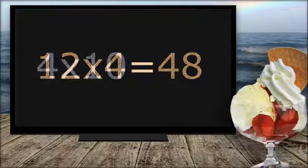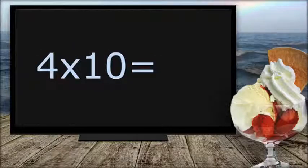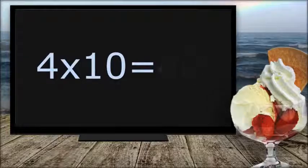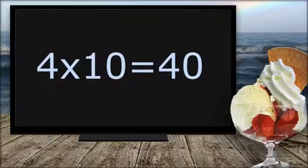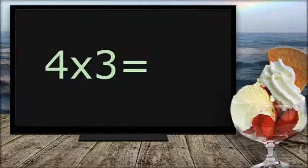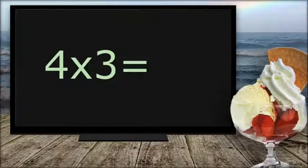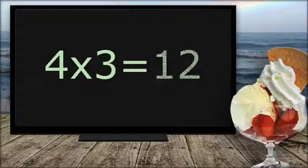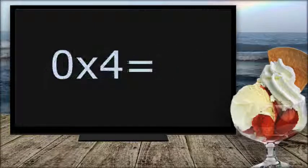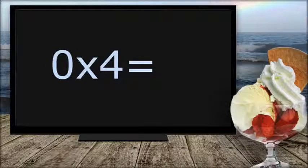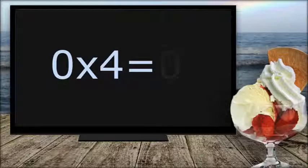Four times ten equals... Forty. Four times three equals... Twelve. Zero times four equals... Zero.